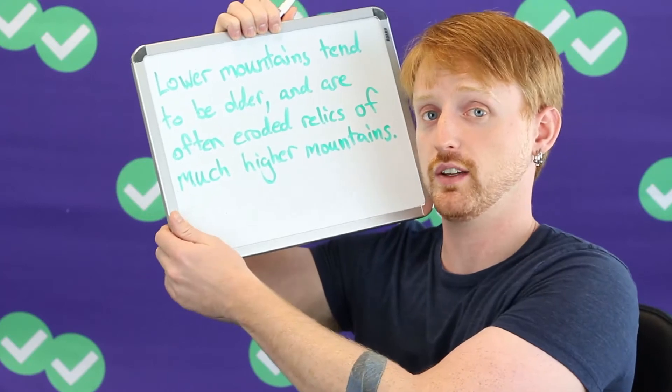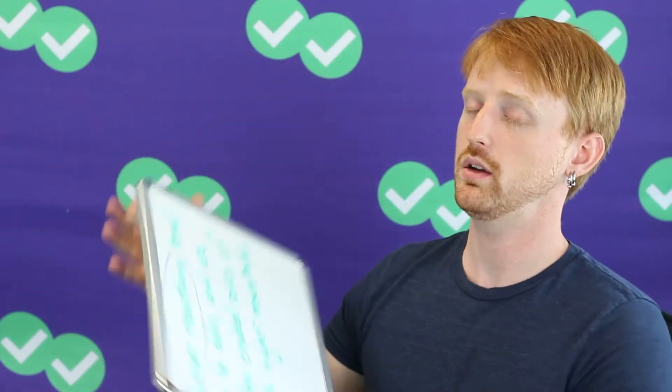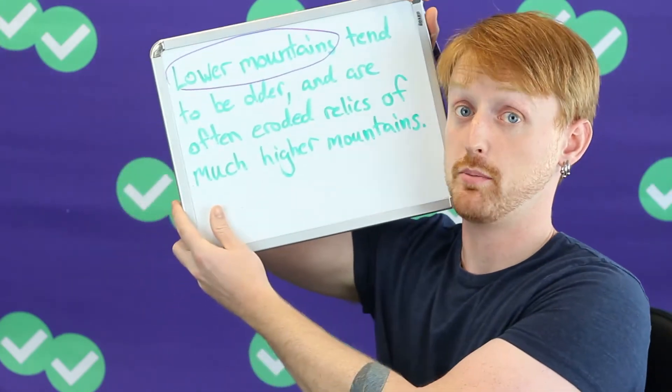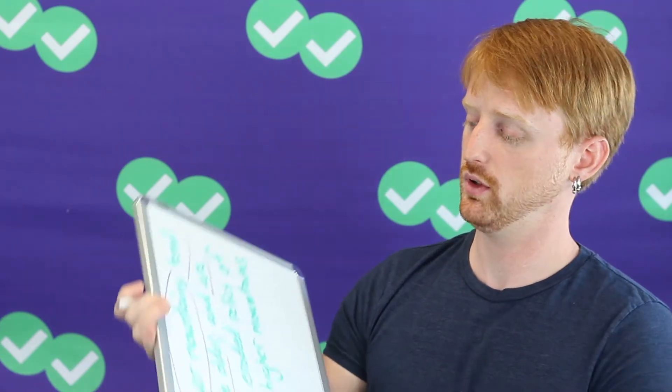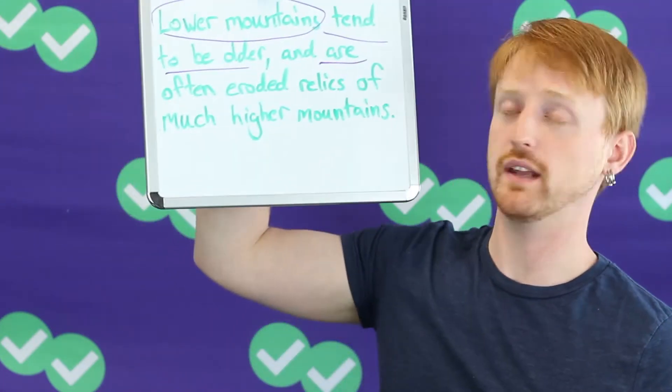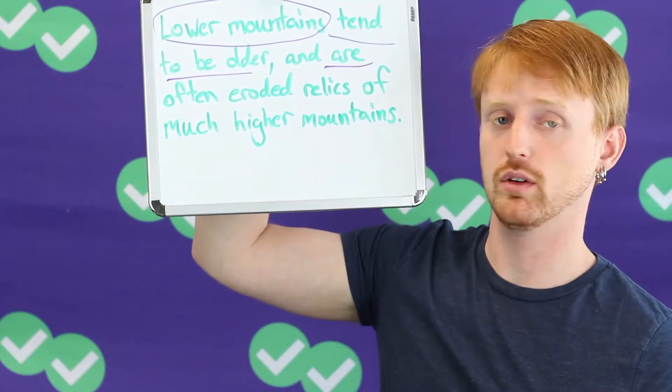It is a difficult sentence and it has, you might notice, one subject, but it actually has two verbs: tend to be and are.